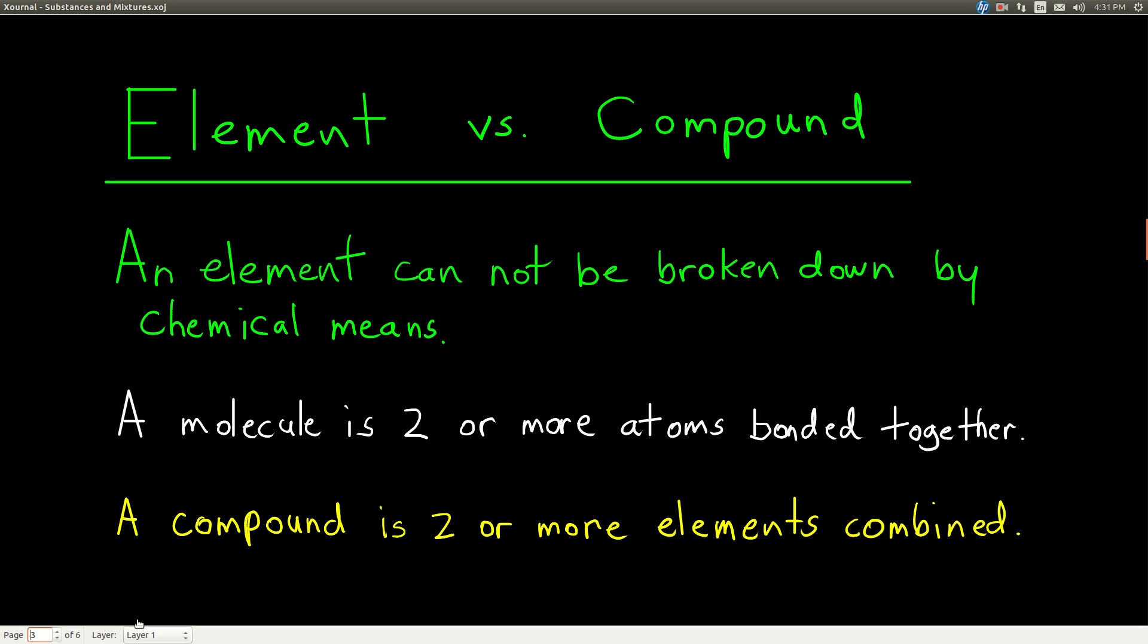Now a molecule can be either an element or a compound. A molecule is two or more atoms that are bonded together. If those atoms are the same element, then that's still an element. But if there's two or more different elements bonded together to make a molecule, that's a compound. What makes something a compound is that it has two or more different elements combined in it.